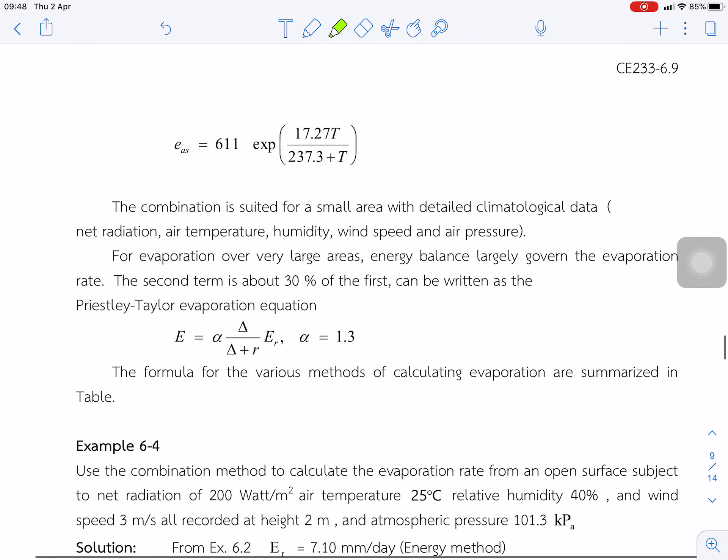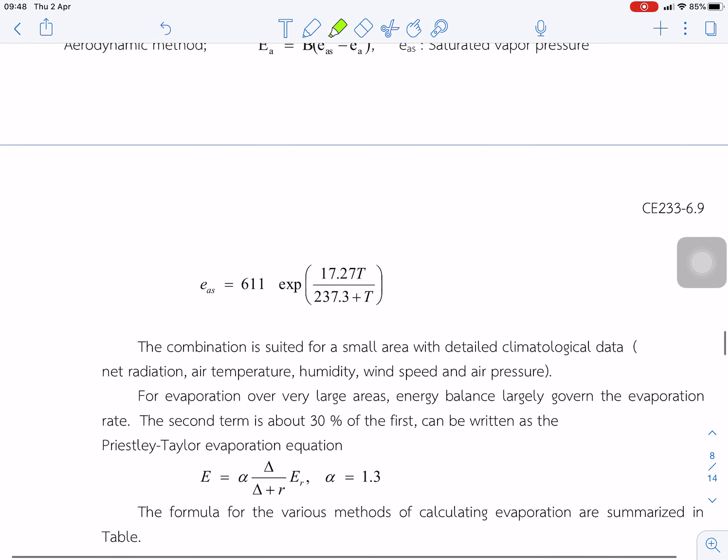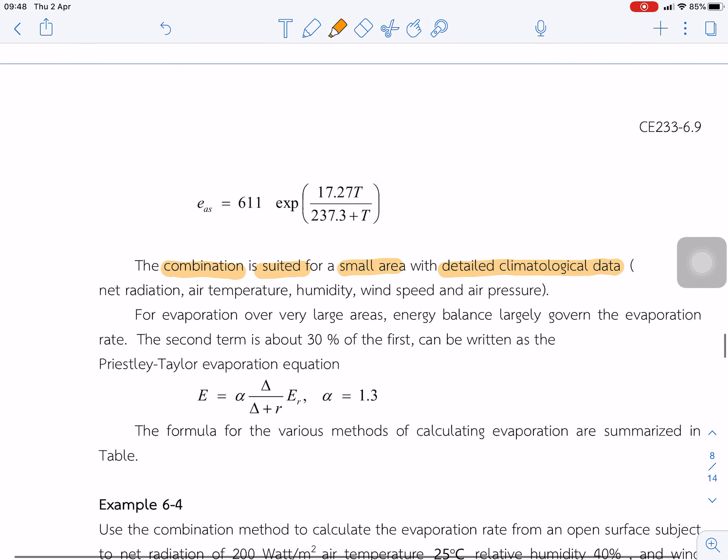The combination method is suited for small areas with detailed climatological data. So we require a lot of data. For example, net radiation, air temperature, humidity, wind speed, and air pressure.